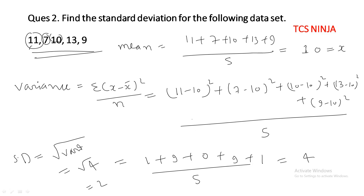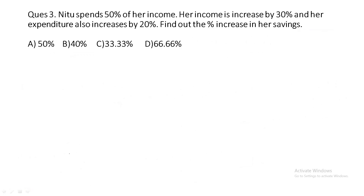The next question: Nitu spends 50 percent of her income. Her income increases by 30 percent and her expenditure also increases by 20 percent. We have columns for income, expenditure, and saving. Let's say Nitu's income is 100 rupees and she spends 50 percent, so she spends 50 rupees. Her saving is also 50 rupees.